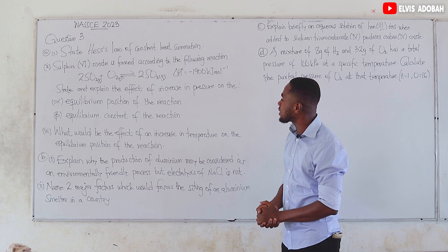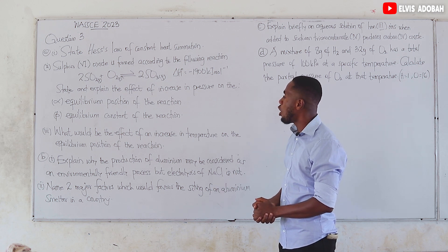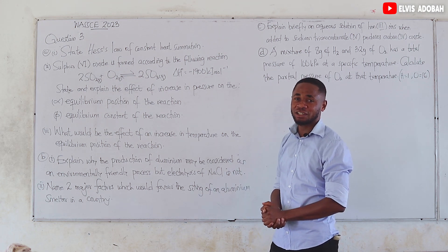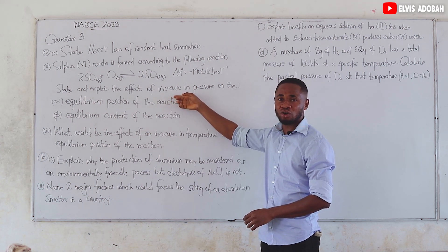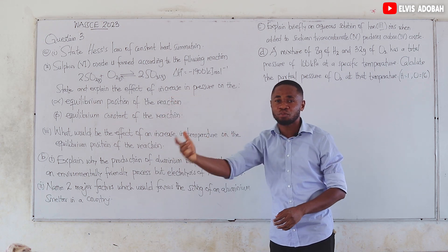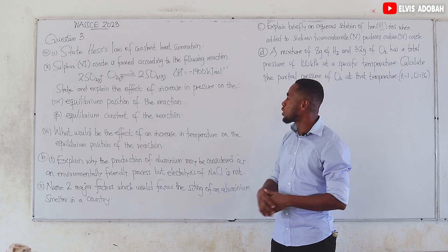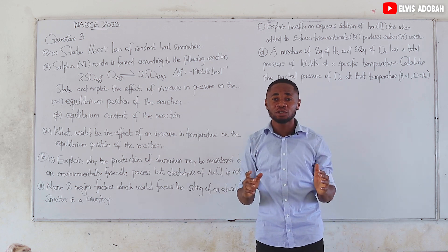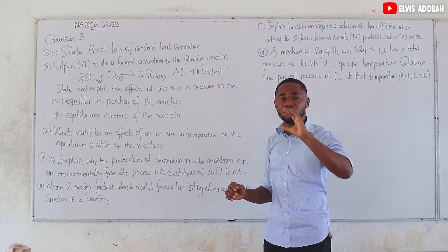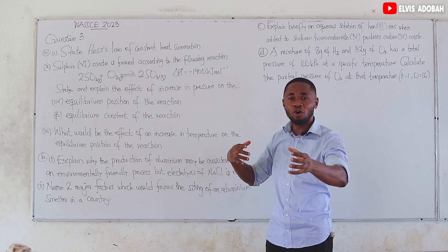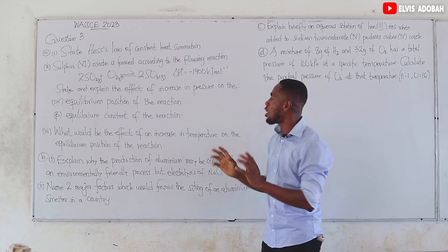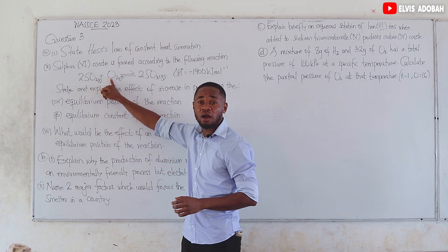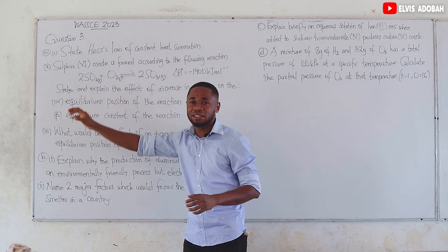State and explain the effect of an increase in pressure on (alpha) the equilibrium position of the reaction. Based on Le Chatelier's principle, we count the moles of gas on each side. On the reactant side: 2 moles of SO₂ and 1 mole of O₂ gives a total of 3 moles of gas.